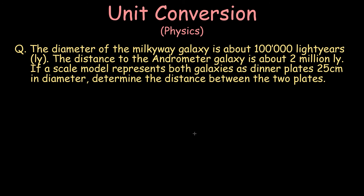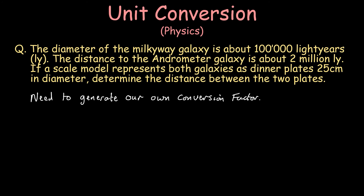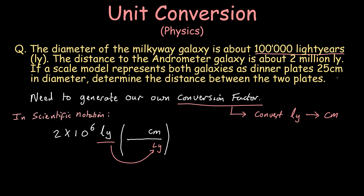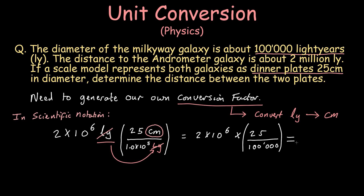The diameter of the Milky Way galaxy is about 100,000 light years across. The distance to the Andromeda galaxy is about 2 million light years. If a scale model represents both galaxies as dinner plates of 25 cm in diameter, determine the distance between the two plates. In this example, we create our own conversion factor from details in the question, converting light years into centimeters. Since 100,000 light years is equivalent to 25 centimeters, dividing 25 centimeters by 100,000 light years equals unity. After cancelling the light-year units and finishing the calculation, we get a value of 500 centimeters.